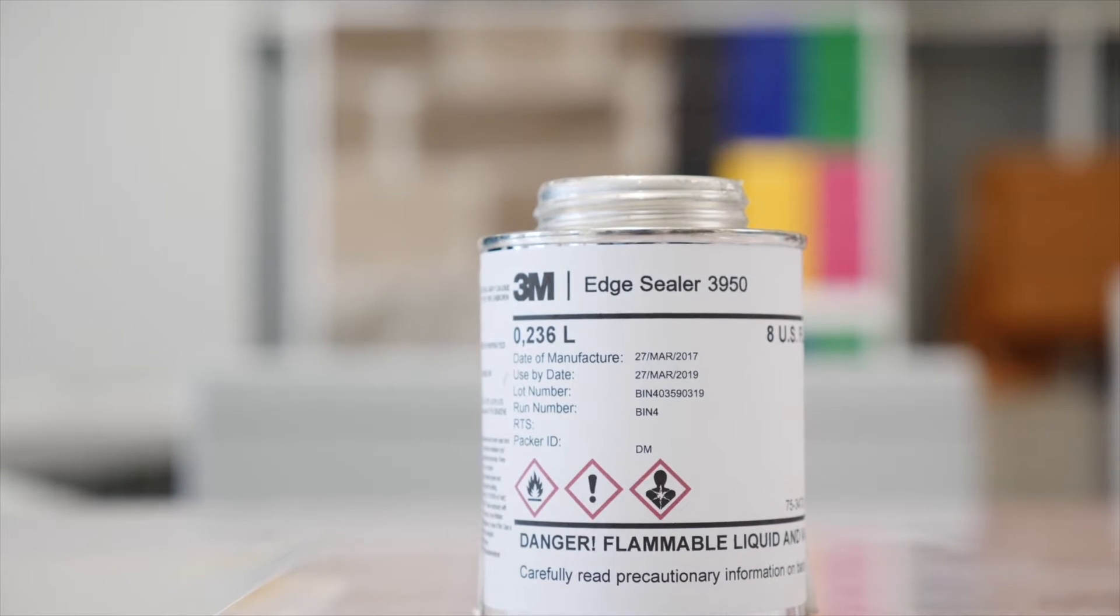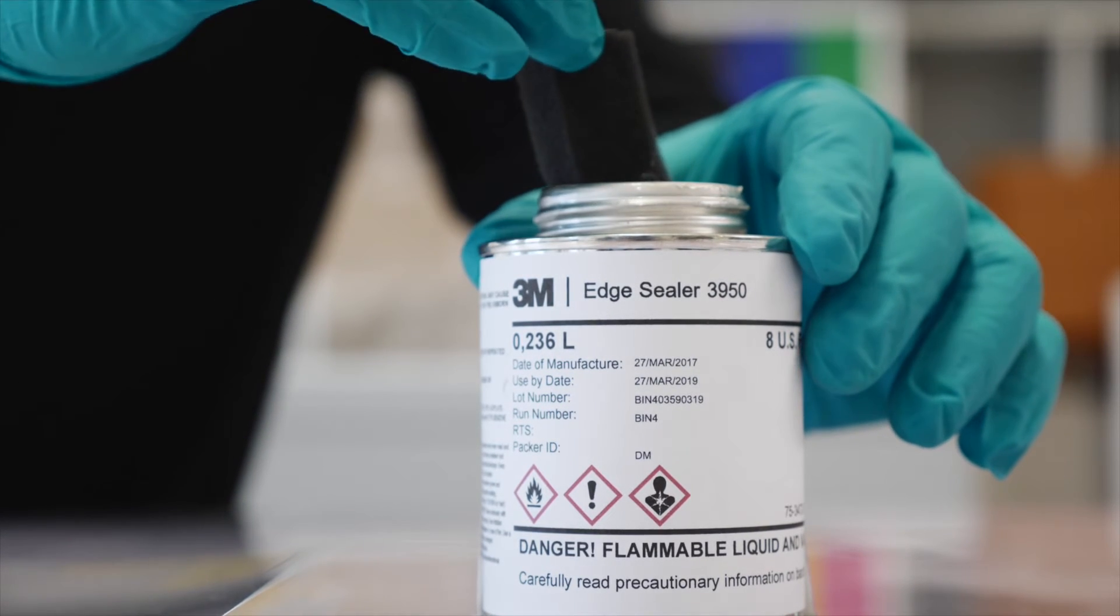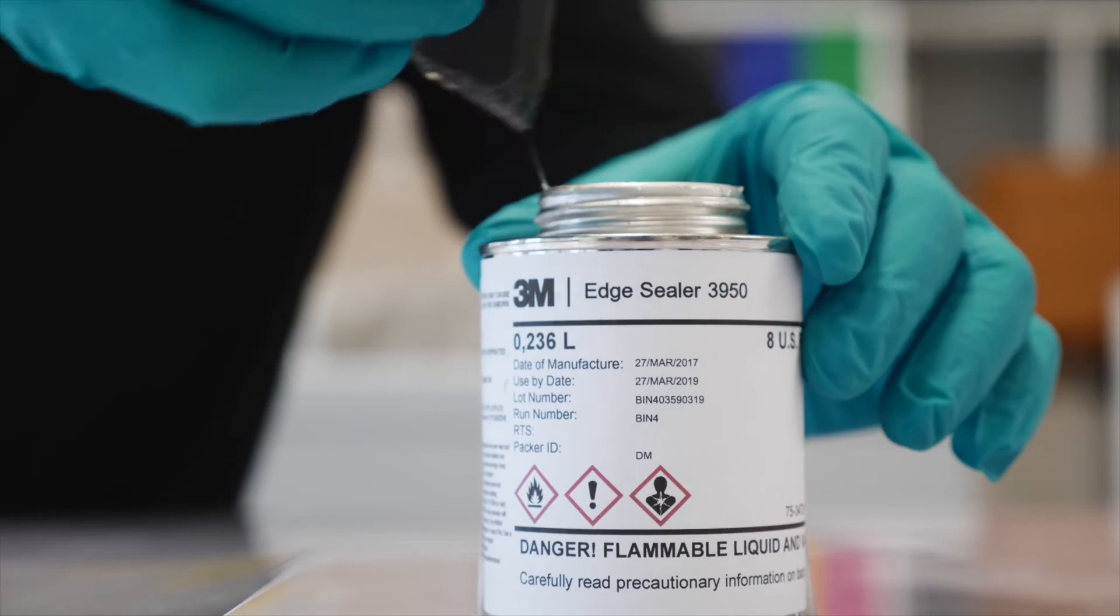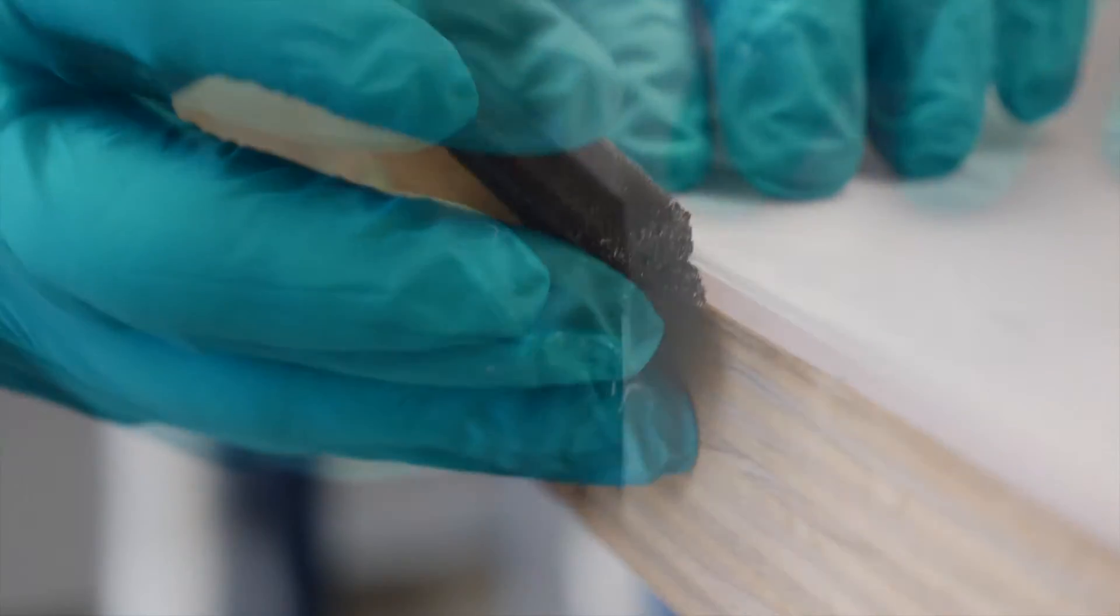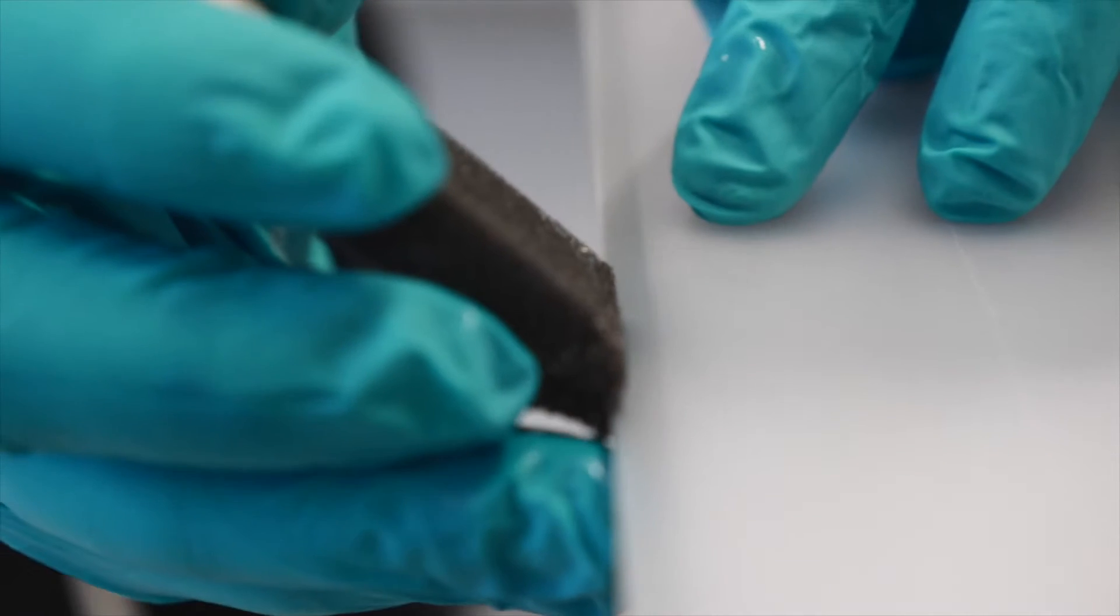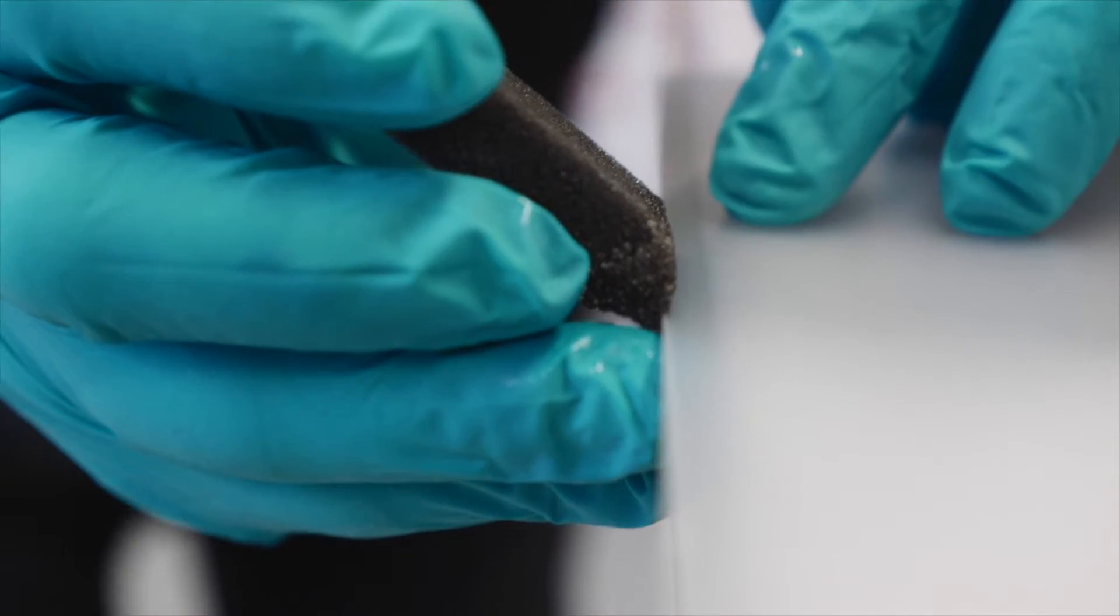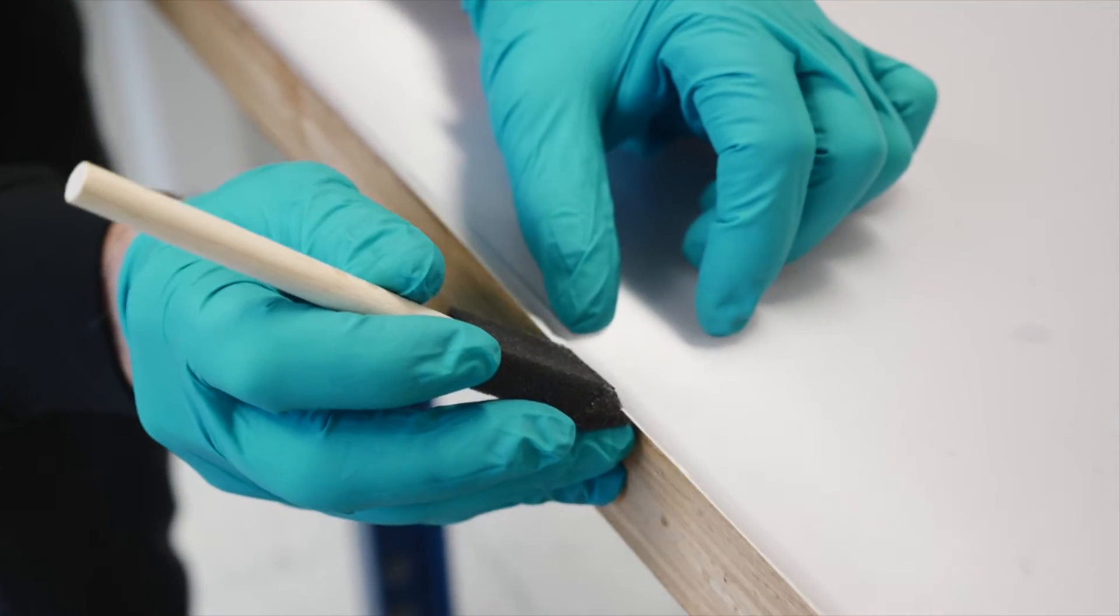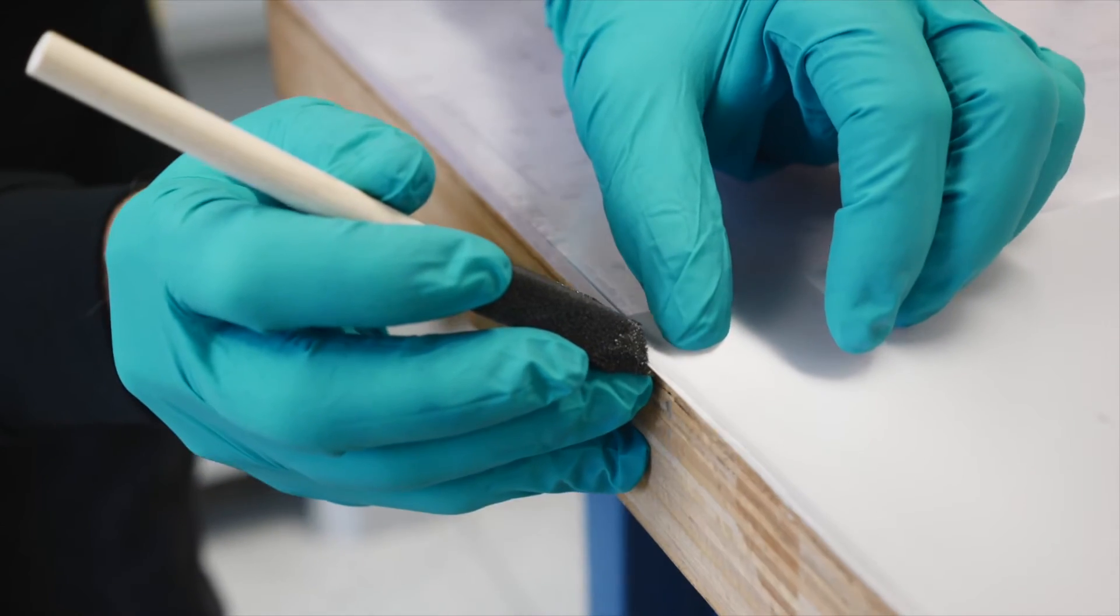It's now important to seal the edges so as to avoid an ingress of moisture during the installation, which might lead to permanent water marking. Carefully apply 3M Edge Sealer 3950 along the left and right vertical edges of the film. Minimize the amount of sealer on the film face by using a foam brush and leave to dry for 5 minutes. It's not necessary to seal the horizontal edges.